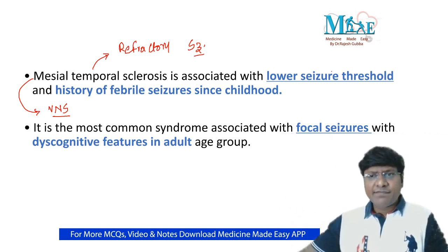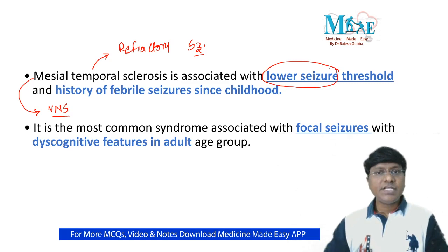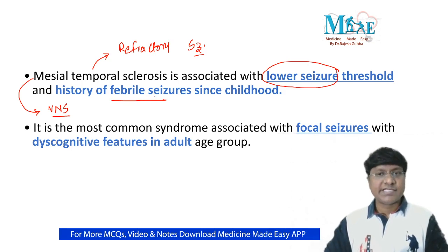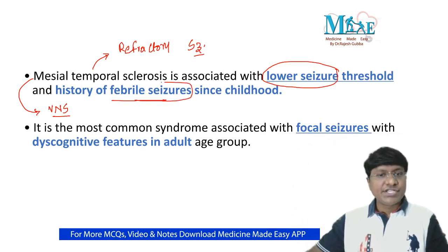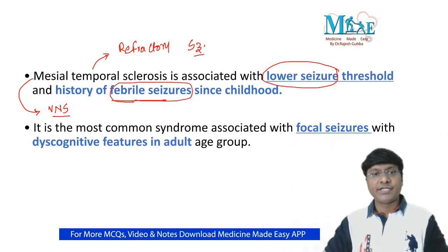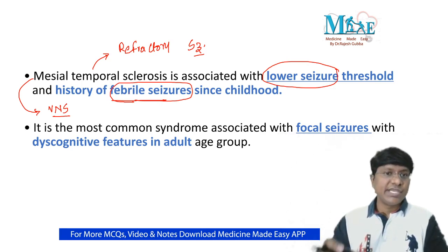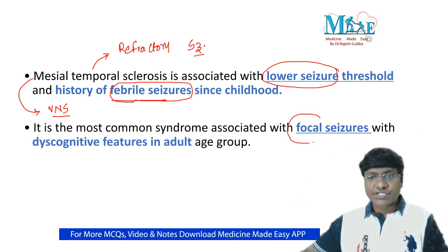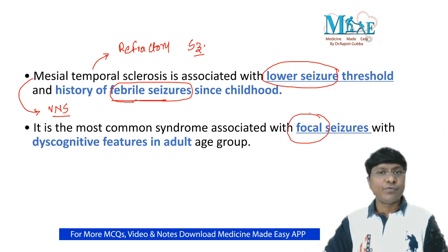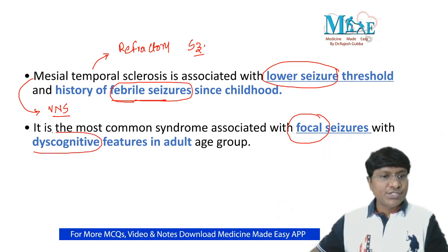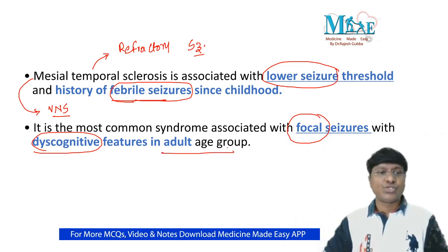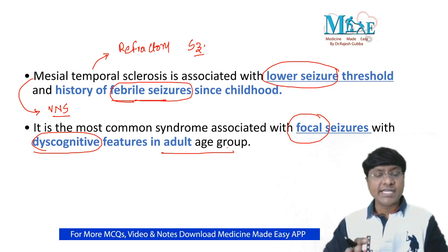These individuals have a very low seizure threshold. If the children have fever, they can develop seizures. So patients with mesial temporal sclerosis have a history of febrile seizures since childhood. Because the sclerosis is in the temporal lobe, these individuals will have focal seizures, and in the adult age group they will also have discognitive features.